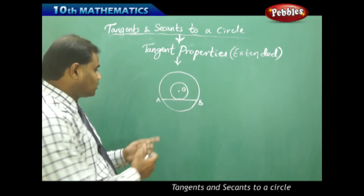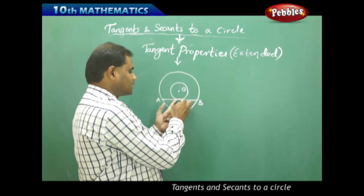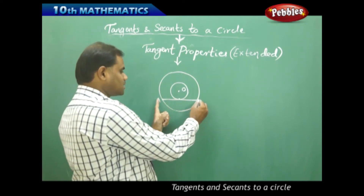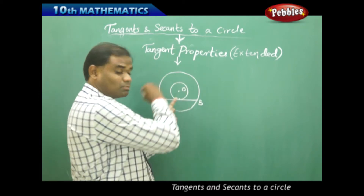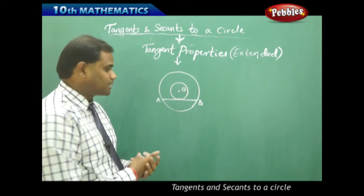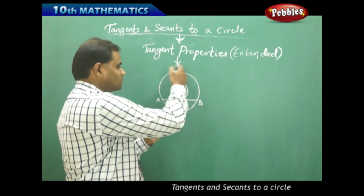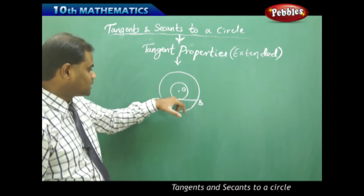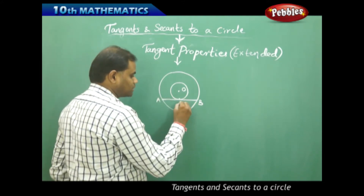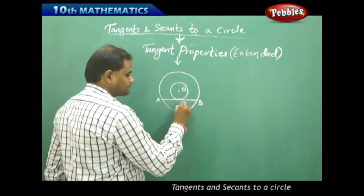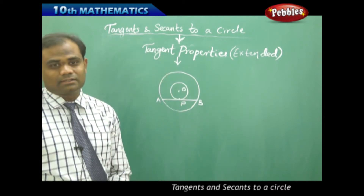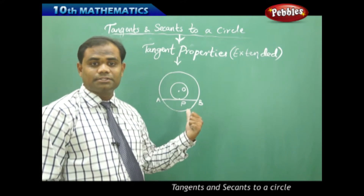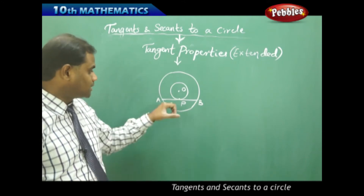I take the chord for the bigger circle in such a way that it touches the smaller circle. Since AB is the secant that touches the smaller circle, AB is the chord or secant for the bigger circle but AB is the tangent to the smaller circle at point P. So AB is the chord for the bigger circle and the tangent for the smaller circle at P.